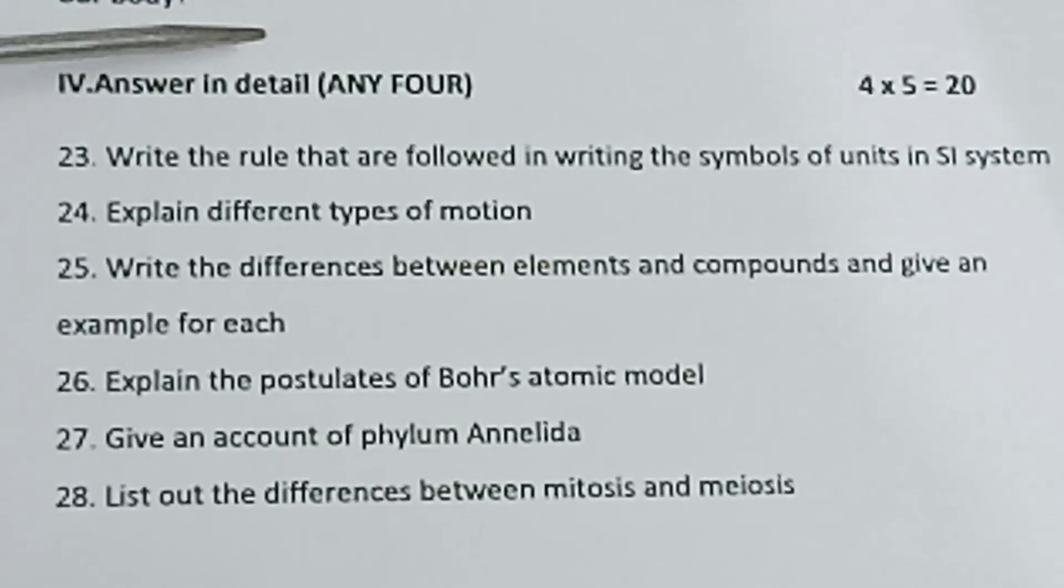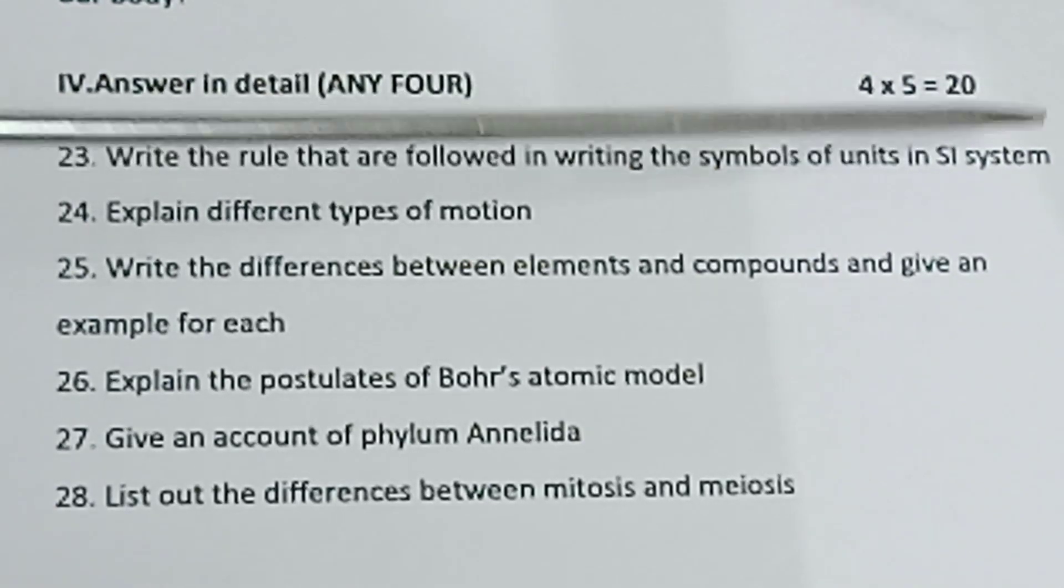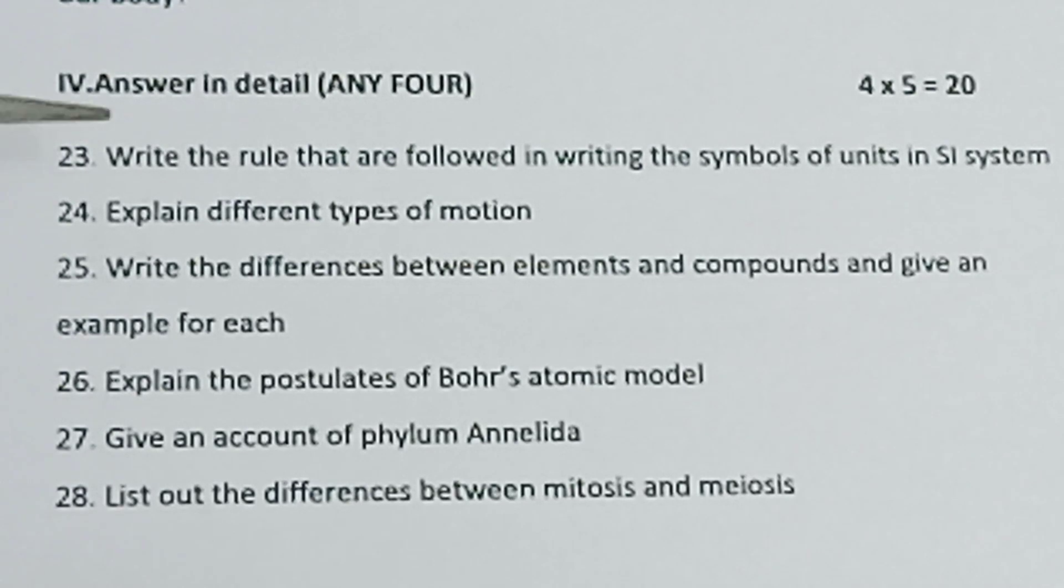Part 4: Answer in detail, any 4. 4 x 5 = 20. There are 6 questions. You can choose any 4 questions. Question 23: Write the rules that are followed in writing the symbols of units in SI system. Question 24: Explain different types of motion. Question 25: Write the differences between elements and compounds and give an example for each. Question 26: Explain the postulates of Bohr's atomic model. Question 27: Give an account of phylum Annelida. Question 28: List out the differences between mitosis and meiosis. All the best.